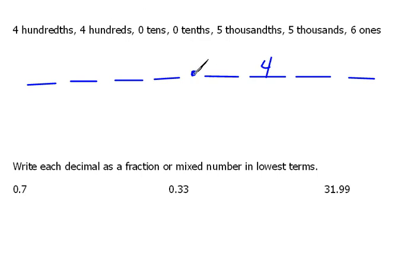Four hundreds, that would be to the left. Tens, hundreds, I'm sorry. Ones, tens, hundreds. Zero tens would be ones, tens. Zero tenths would be one place to the right. Five thousandths would be tenths, hundredths, thousandths.